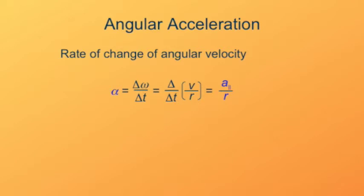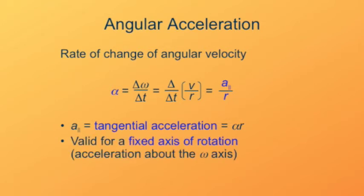What does this parallel acceleration mean? That's the tangential acceleration. That's the rate at which this orbiting point is speeding up or slowing down. It's the component of acceleration in the direction of the path. This expression is valid for a fixed axis of rotation. If you start to change the axis of rotation, we can still handle that. It just becomes more complicated. And we'll defer that discussion to a later time.